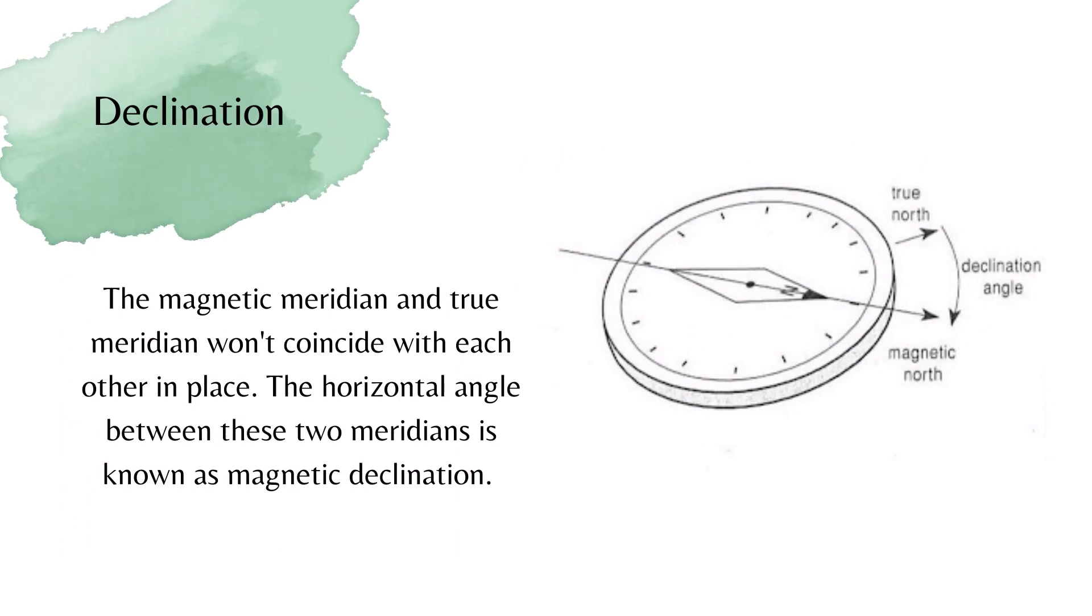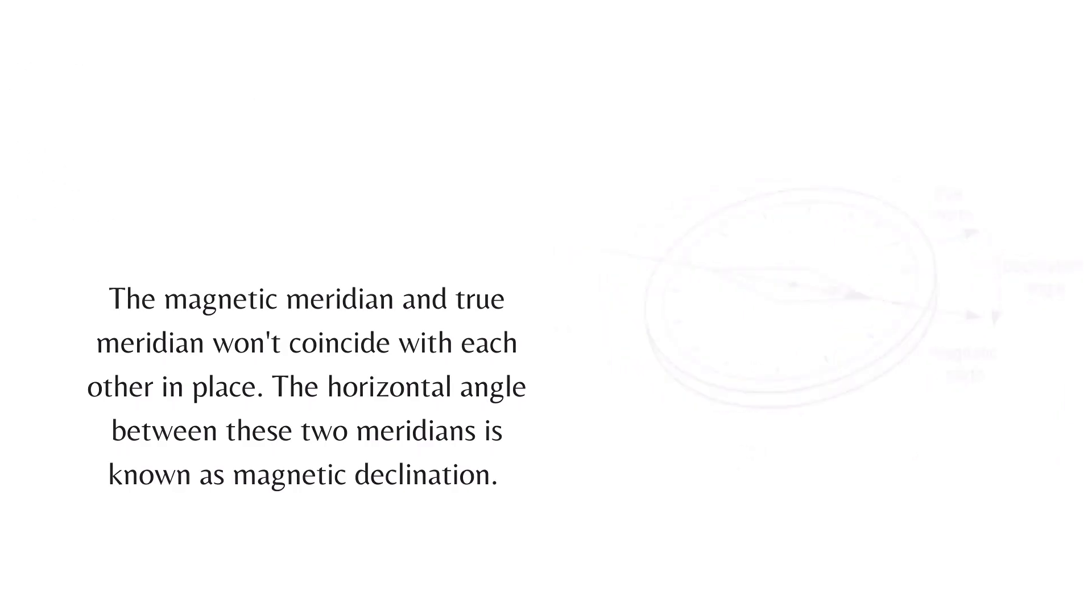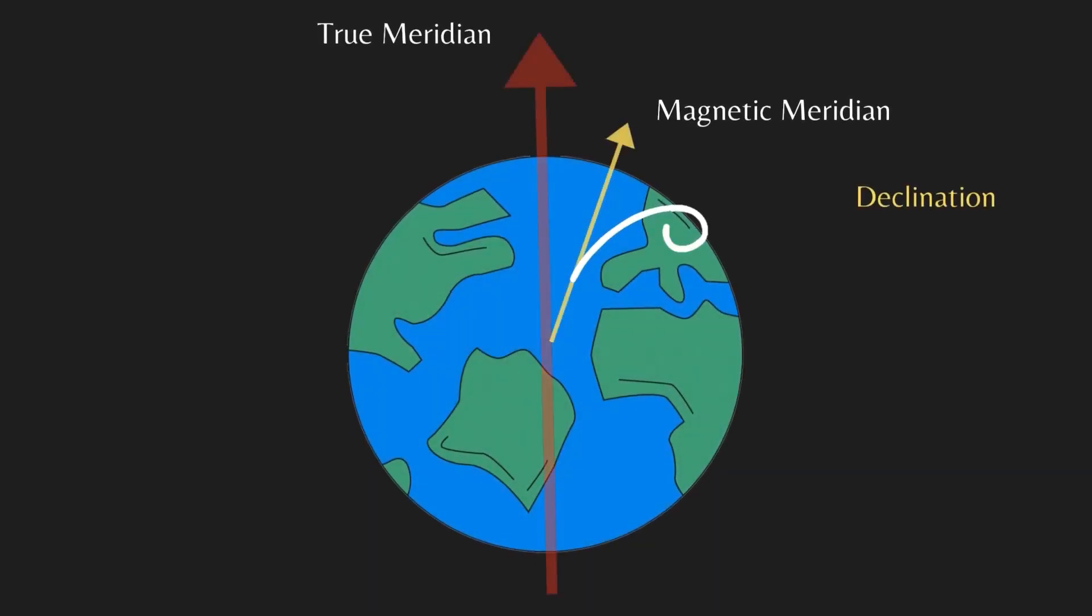Declination is defined as the angle created between the magnetic meridian and true meridian. The magnetic north has a certain deviation from the true north by an angle, and that angle is what we call declination or magnetic declination.